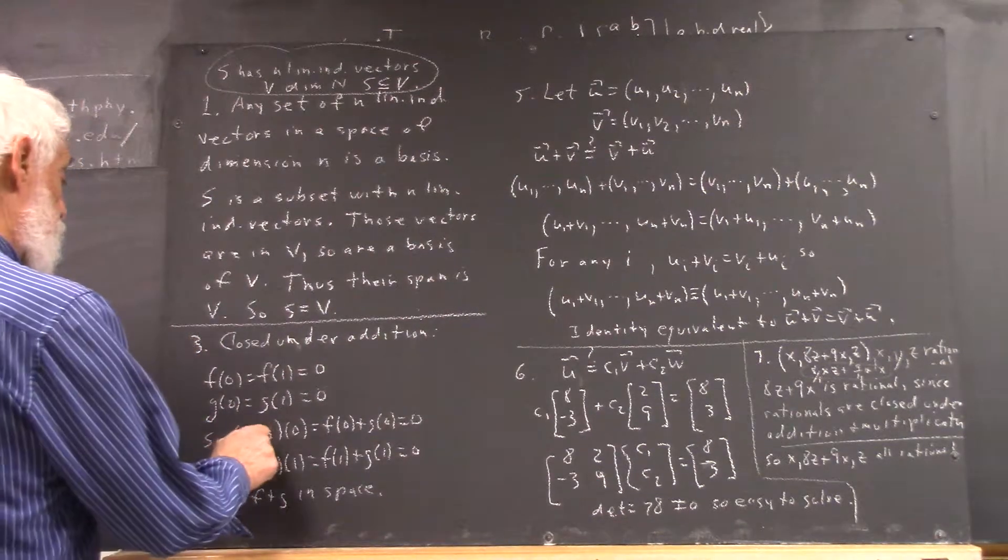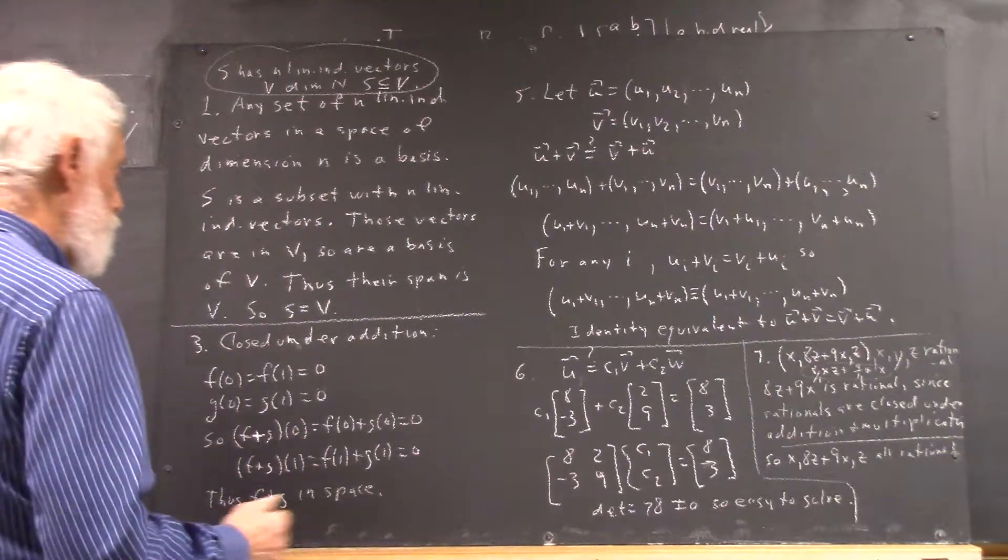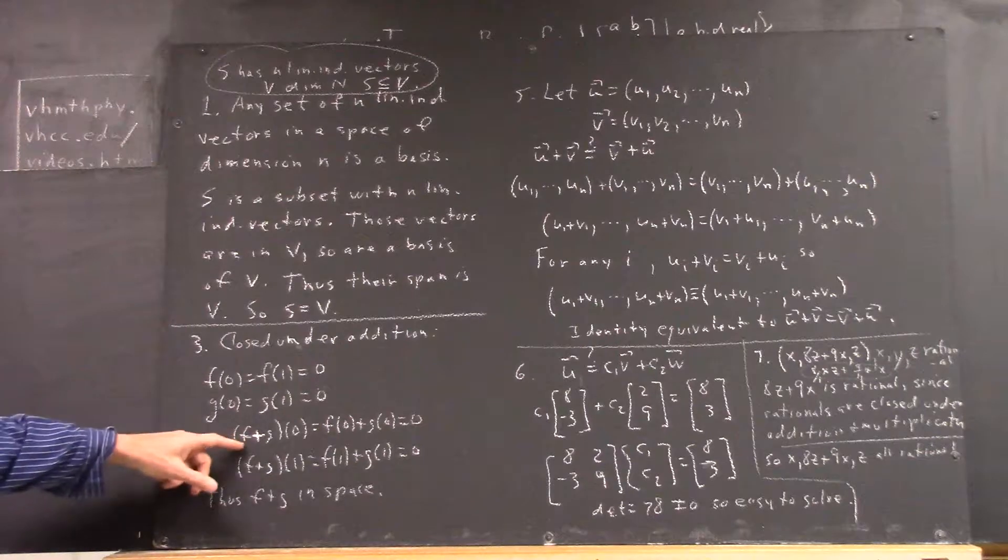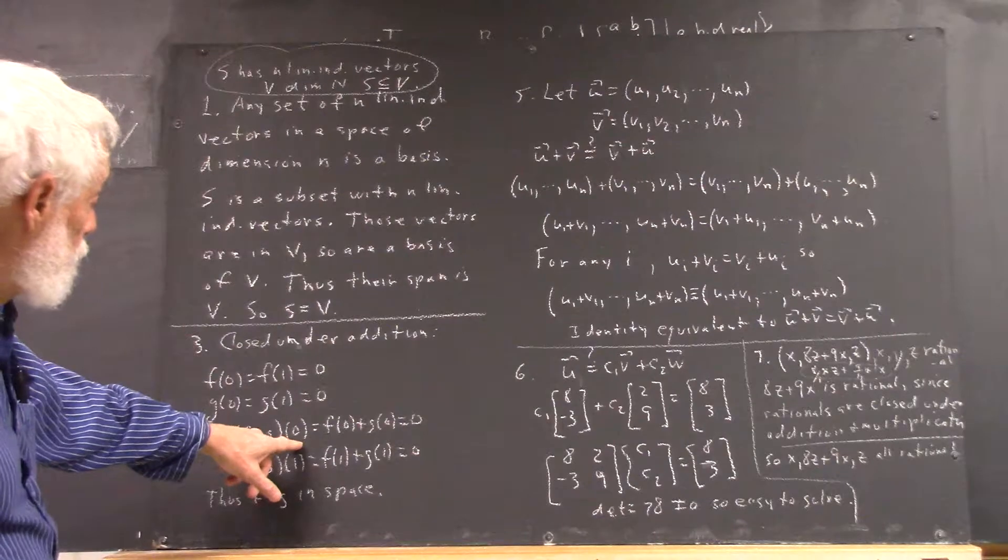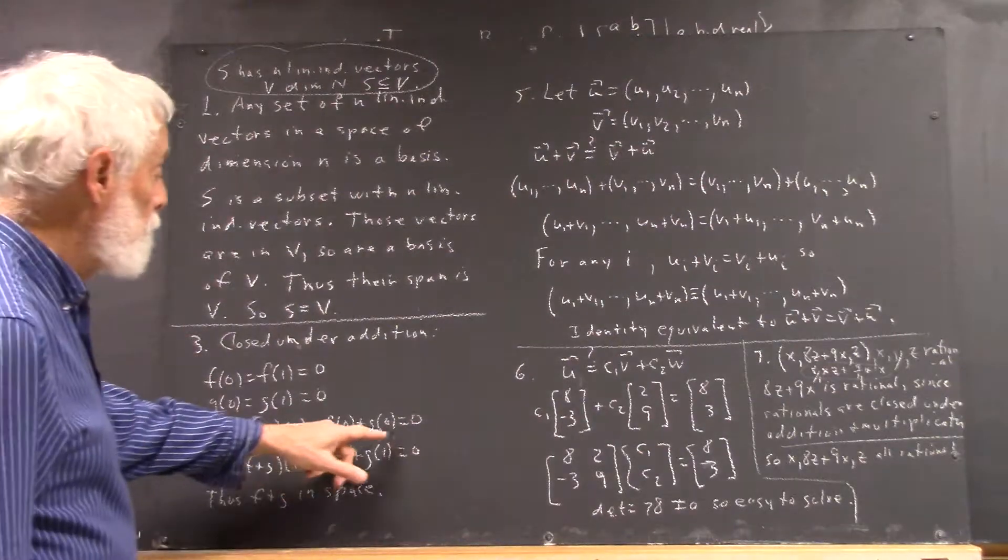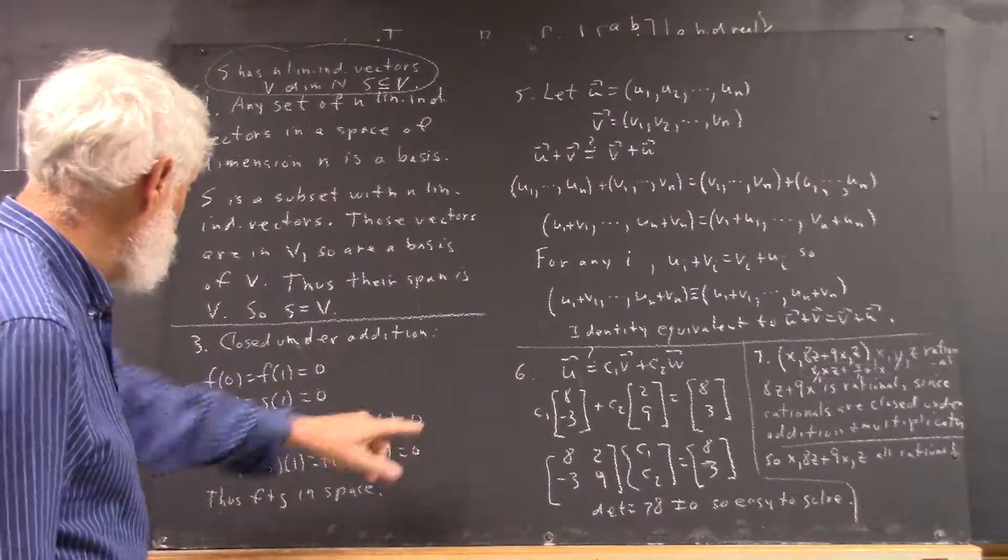Well then it follows that f plus g of 0 equals what? Okay, the sum of the two functions, f plus g, evaluated at 0, well that just means f of 0 plus g of 0, and f of 0 and g of 0 are both 0, so the sum is 0.